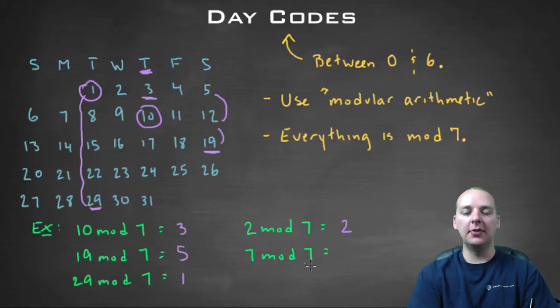Seven modulo seven would be zero, because you could divide seven into seven with no remainder. And we would rather have the number zero than the number seven. I know you don't have the number zero on a calendar, but for the algorithm, we would prefer to call it zero, as opposed to calling it seven.